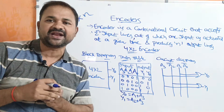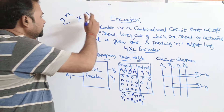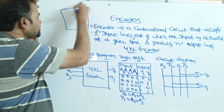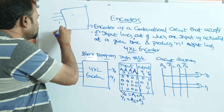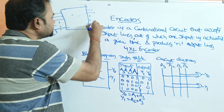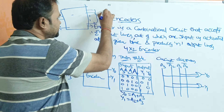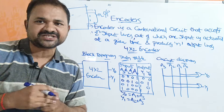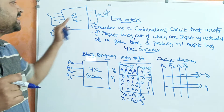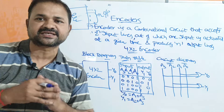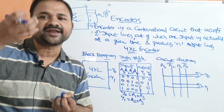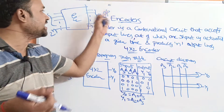Let us see the block diagram for the encoder. The encoder accepts 2^n input lines and produces n output lines, so the 2^n input lines are encoded into n output lines.